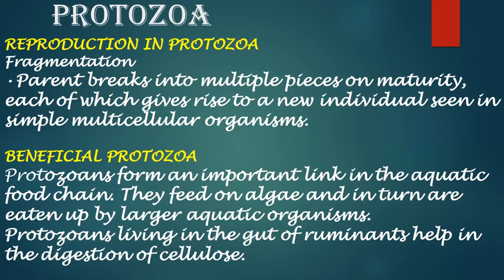Protozoa form an important link in the aquatic food chain. They feed on algae and in turn are eaten up by larger aquatic organisms. Protozoa living in the gut of ruminants help in the digestion of cellulose.